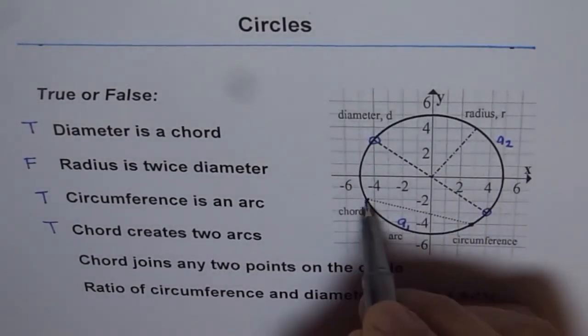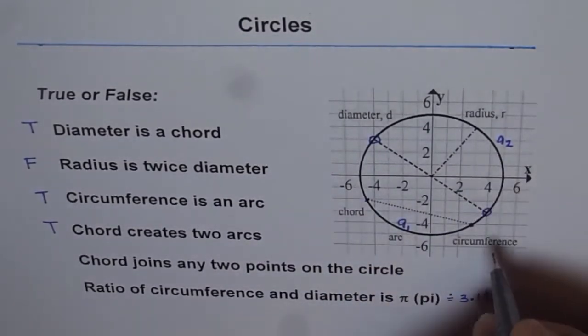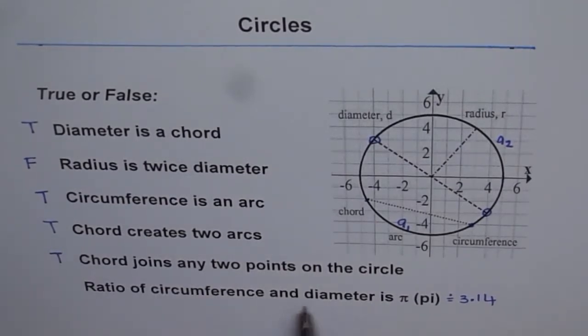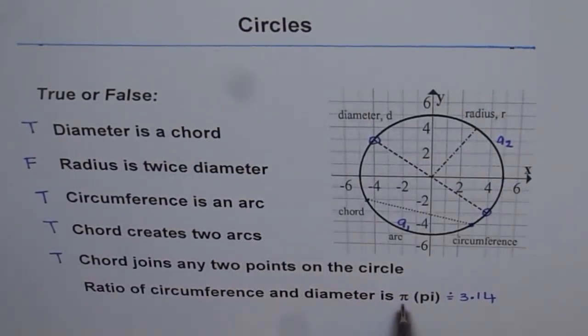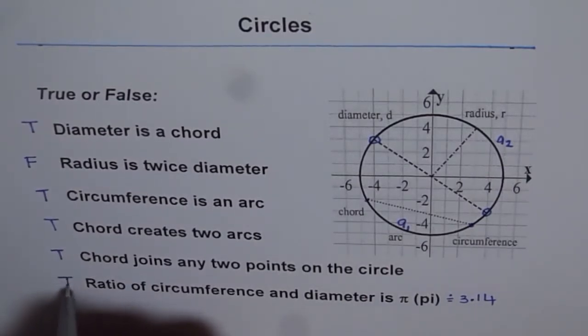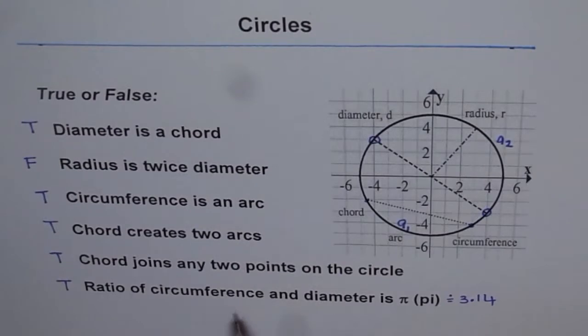Ratio of circumference to diameter is pi, 3.14. That is true. So if you make many circles and check the ratio of circumference to diameter, always you'll get this constant value which is approximately 3.14, and it is called pi. Okay, thank you.